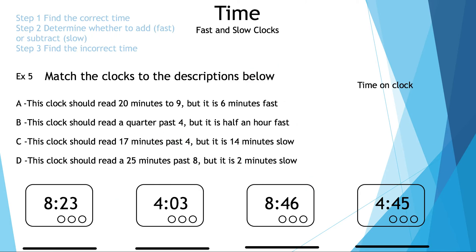Now let's take a look at example five, which is a little bit different. The steps will be different as well. Step one: find the correct time. Step two: determine whether to add or subtract. Step three: find the incorrect time so we can match it to the clocks.